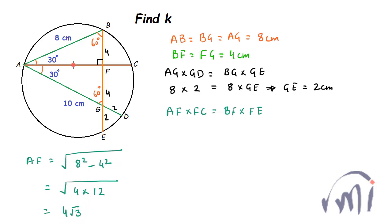Otherwise also, this AF will be equal to 8 cos 30 and cos 30 is root 3 by 2, so that will be 4 root of 3. So if AF is equal to 4 root of 3, that means FC will be equal to K minus 4 root of 3.